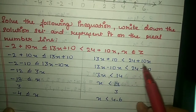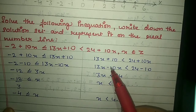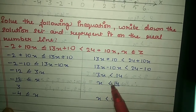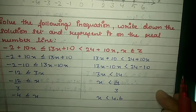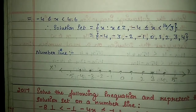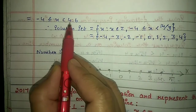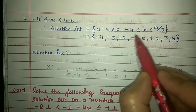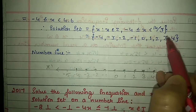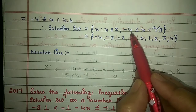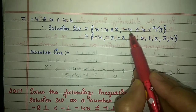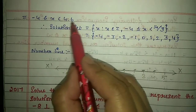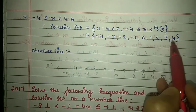Take the remaining half: 13x + 10 < 24 + 10x. Shift 10x to the left and 10 to the right, giving 3x < 14, or x < 14/3, which equals 4.6. Joining together: minus 4 ≤ x < 4.6. Write your solution set: {x : x ∈ Z, minus 4 ≤ x < 14/3}. The integers in this range, including minus 4 (equal to symbol present), are: minus 4, minus 3, minus 2, minus 1, 0, 1, 2, 3, 4.